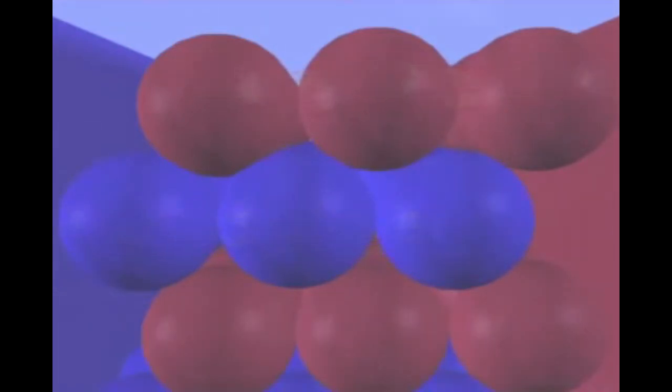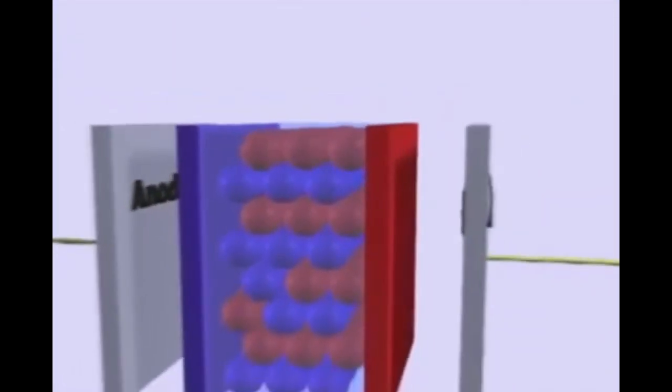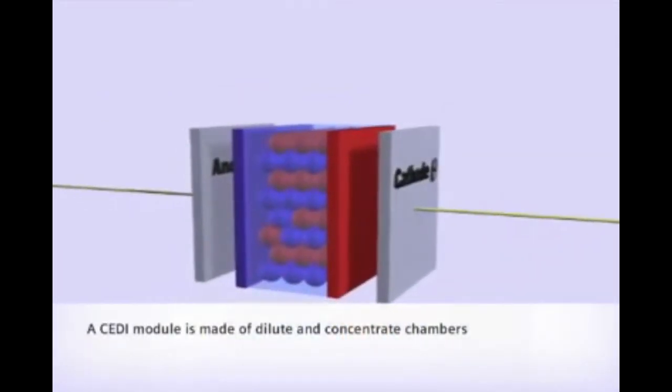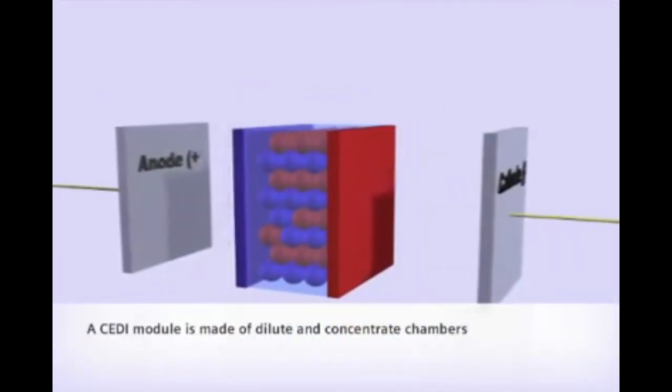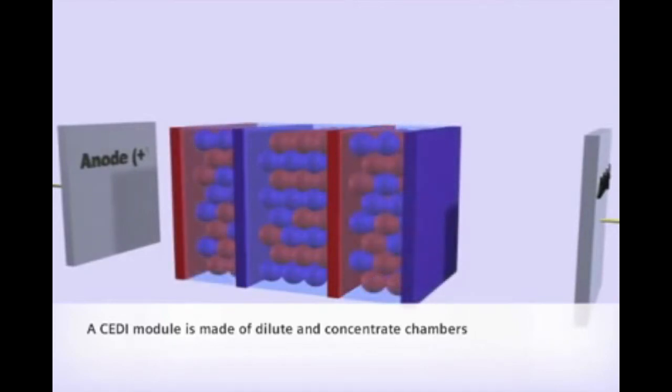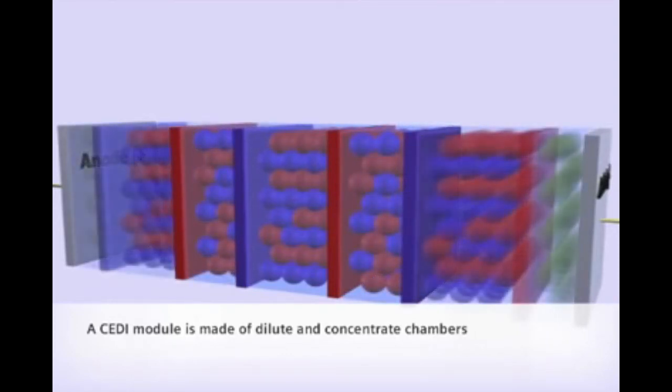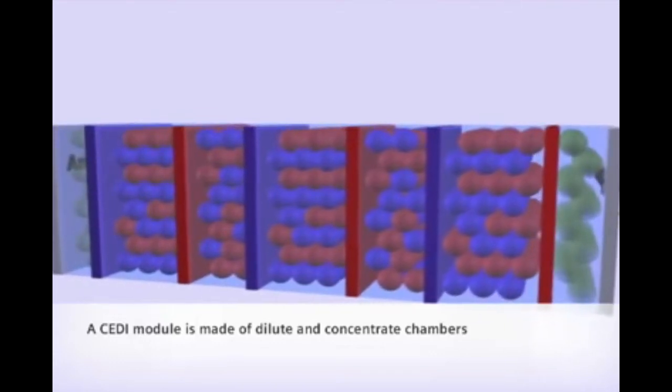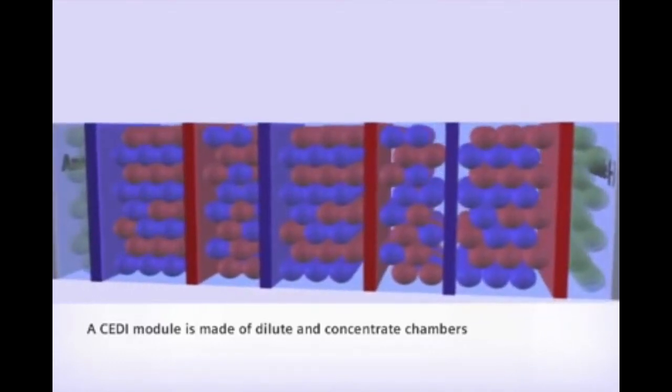Taking a step back to look at how an IonPure CEDI module is constructed, we can see that if we move the electrodes farther apart and continue to add resin beads sandwiched between the cation and anion-selective membranes, we create a series of water purification compartments alternating with compartments where the ions are concentrated.